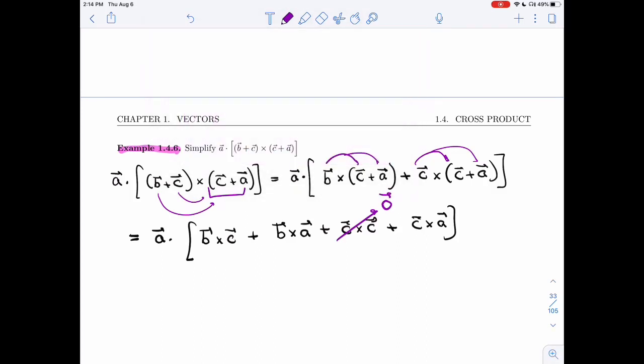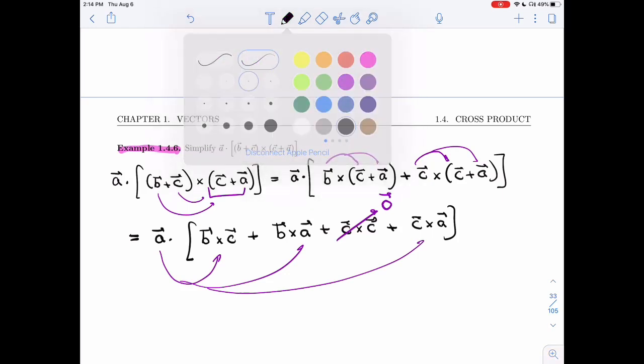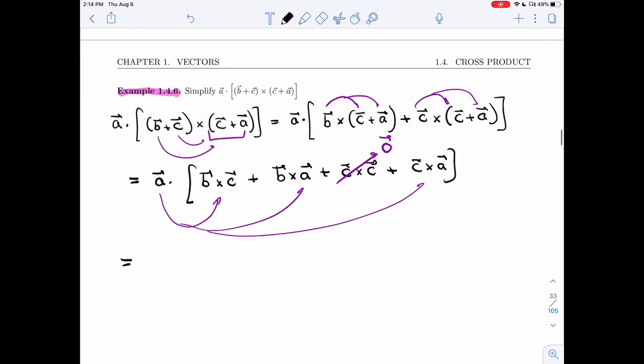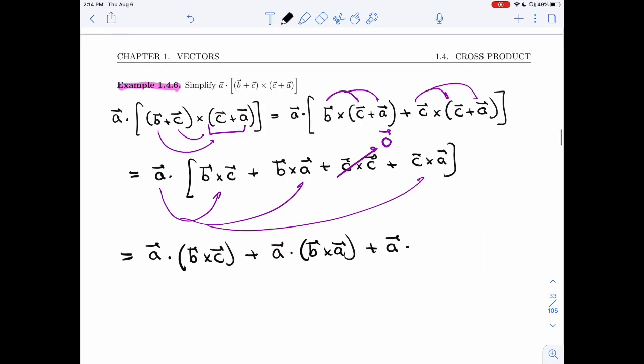And now we're left with this sum of three. I know that the dot product distributes over a sum, so I will multiply each of them with A. So careful with the parentheses here. I have A dot B cross C plus A dot B cross A plus A dot C cross A.